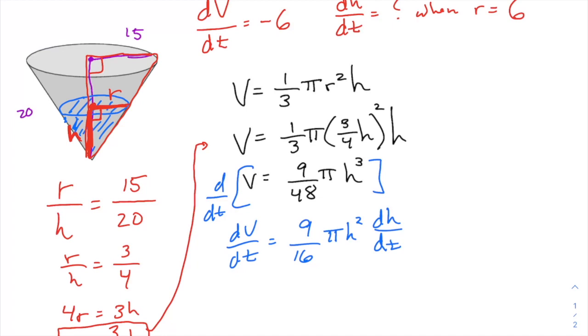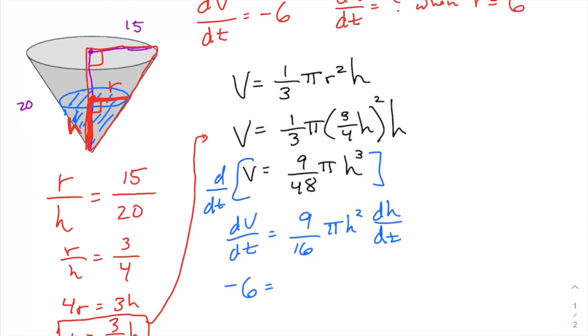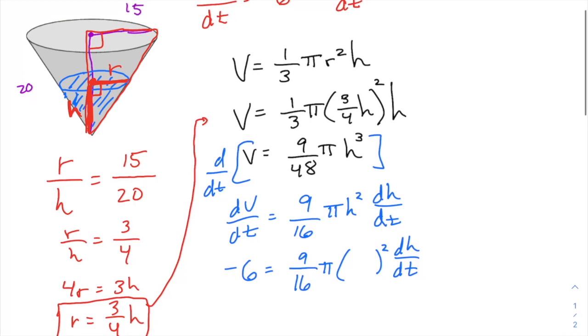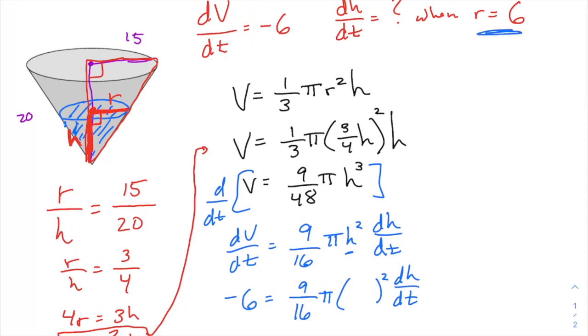dV/dt we've been given is always negative six, the rate of change of its volume. It's always losing six cubic feet per hour. And I want to know what is dh/dt at the moment when r is six. And so to finish this problem off, this is another common thing that pops up in these kinds of problems is that I need to know, well, what is h at this moment? I've chosen to change it all into h. But when r is six, what is h at that moment?